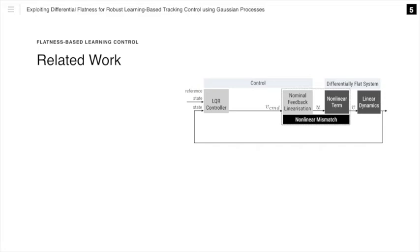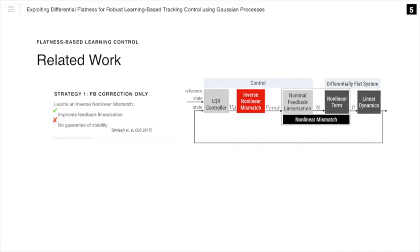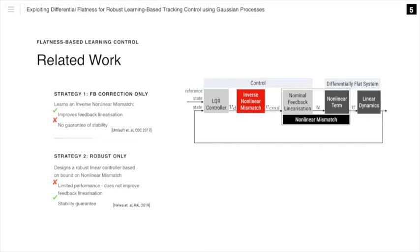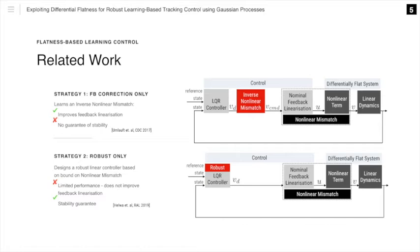There are two main strategies to incorporate learning into the control loop for differentially flat systems. The first strategy, which we call feedback correction only, tries to learn an inverse to the non-linear mismatch. While this strategy can improve the feedback linearization, it provides no guarantee of stability. The second strategy, which we call robust only, instead tries to quantify a bound on the non-linear mismatch, and then designs a robust linear controller based on the bound. While stability can be guaranteed, performance is limited as this approach does not improve the feedback linearization.